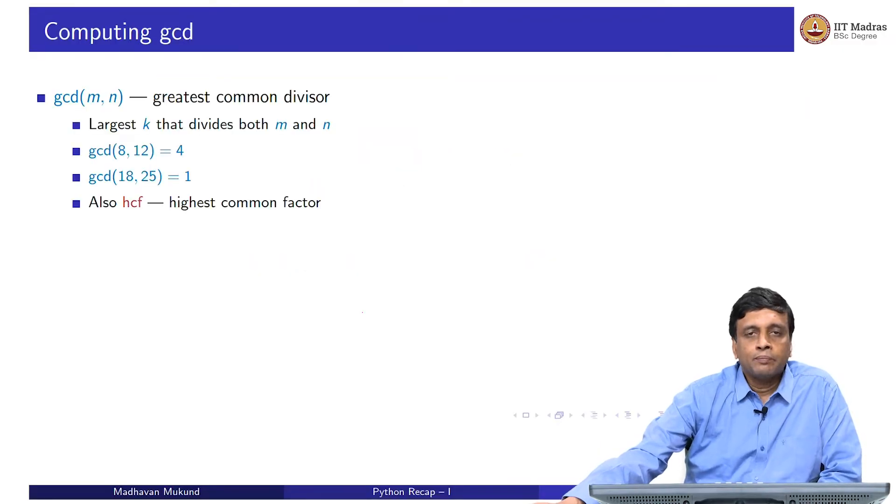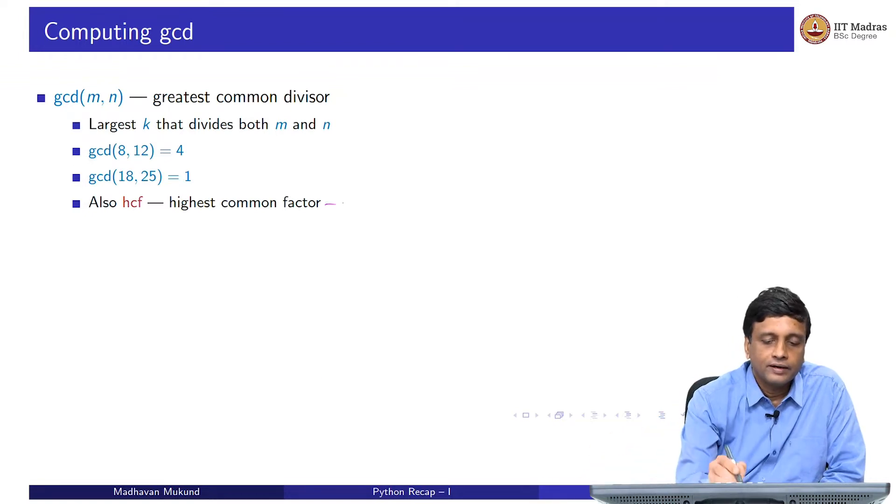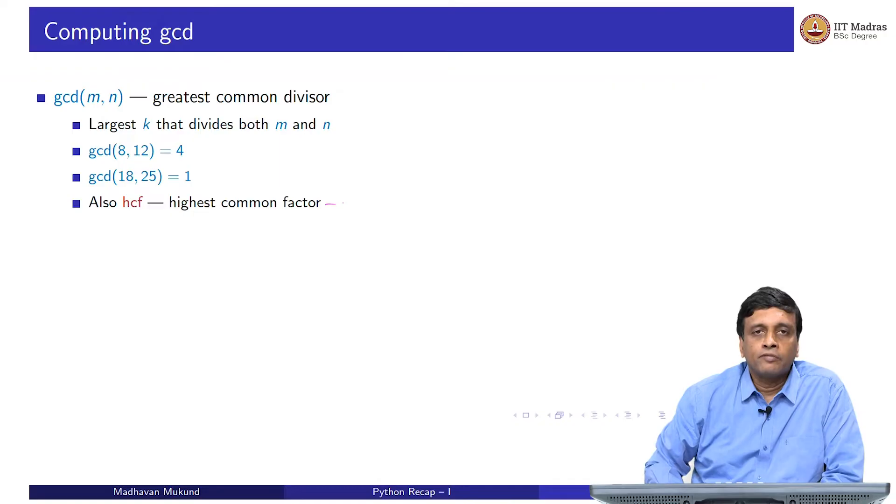My first running example is going to be the greatest common divisor problem, GCD. Remember that the GCD, which is also sometimes called the HCF, is the largest common factor or the greatest common divisor of m and n.